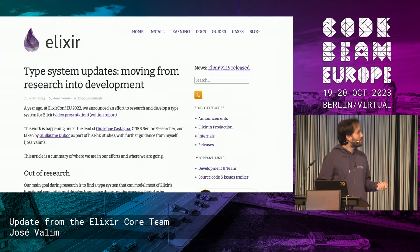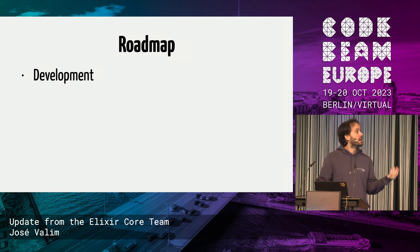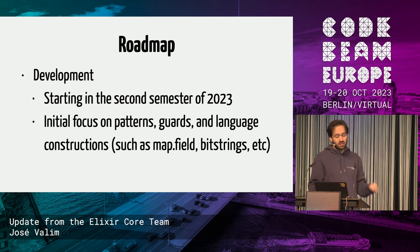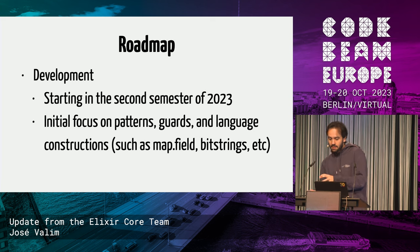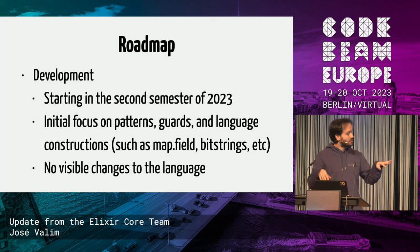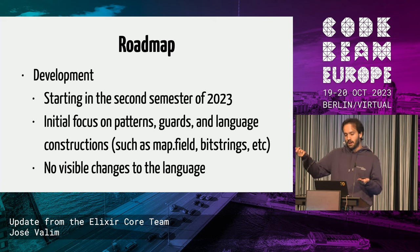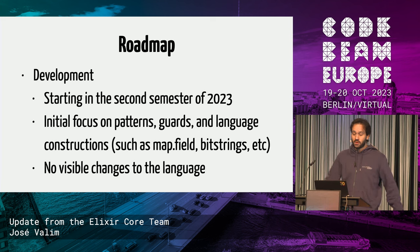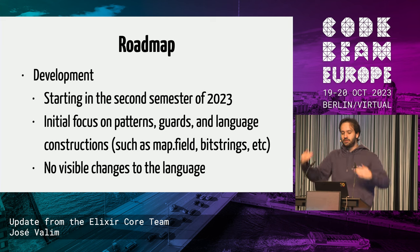A couple months ago we announced our work has moved from research into development, starting the second semester of this year. Our goal is to focus on patterns, guards, and language constructions. We want to implement the type system behind the scenes, get information from patterns, guards, and constructions like map field access, and try to find bugs in your code — no visible changes to the language. We can then focus on improving type system performance and error messages. Annette is exploring a different direction for Erlang, starting from type specs, and it's nice that we're approaching the problem from different directions and sharing insights.